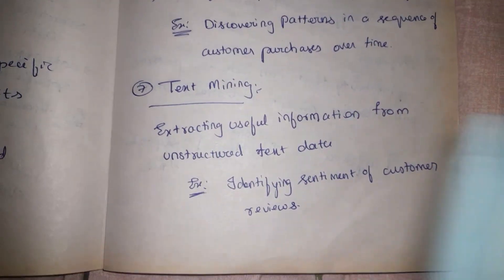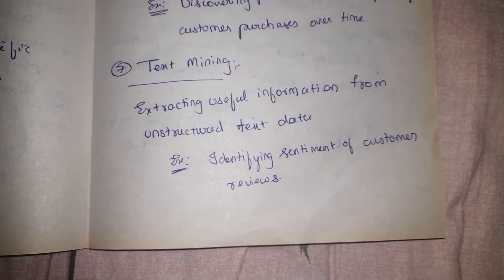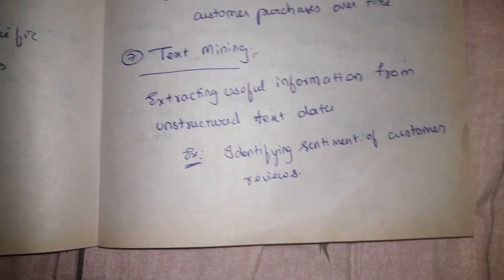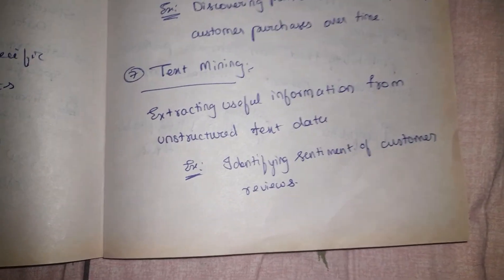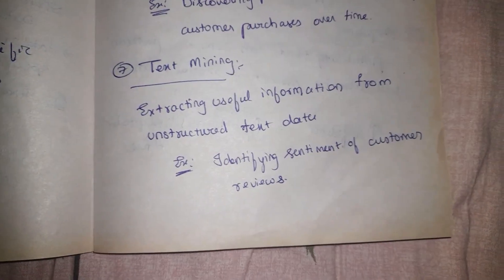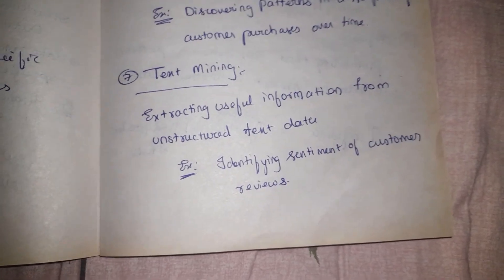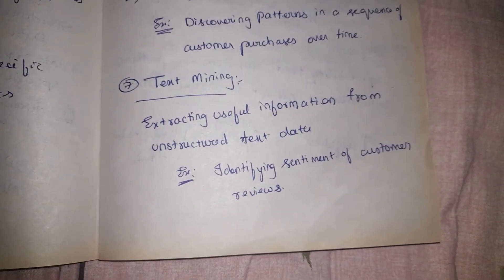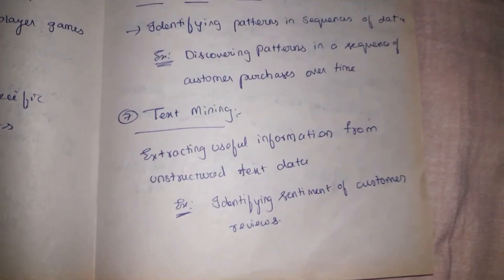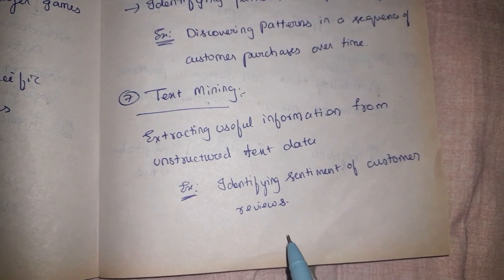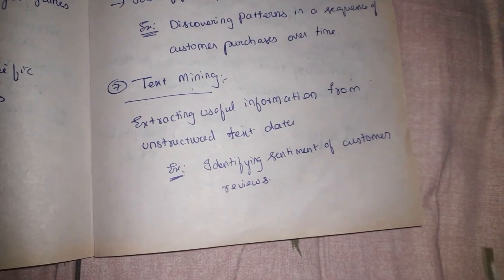Next is text mining — extracting useful information from unstructured text data. Data mining simply means extracting information from a dataset, whether it is text, structured rows and columns, or unstructured data. For example, text mining can be used to identify the sentiment of customer reviews as positive, negative, or neutral.